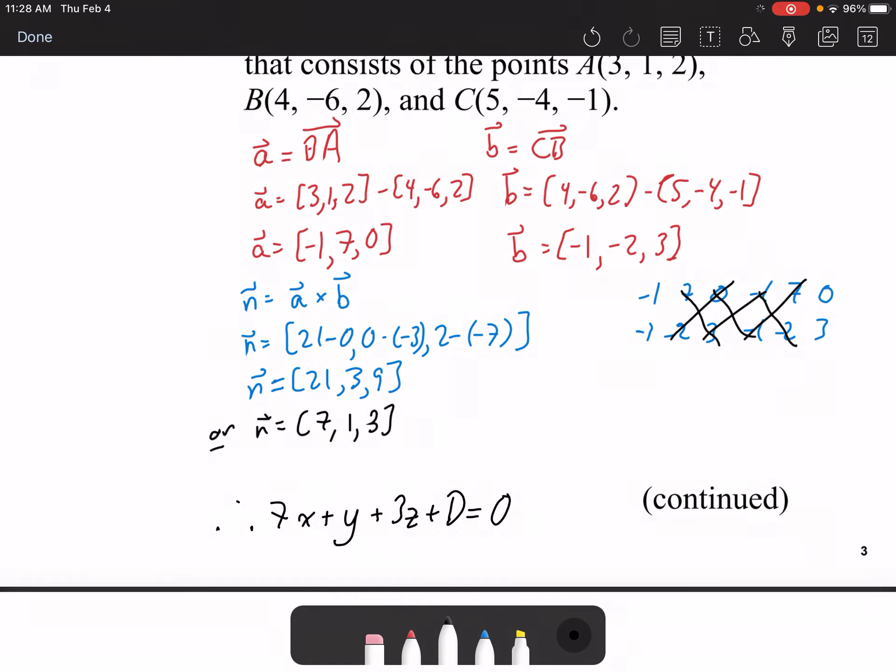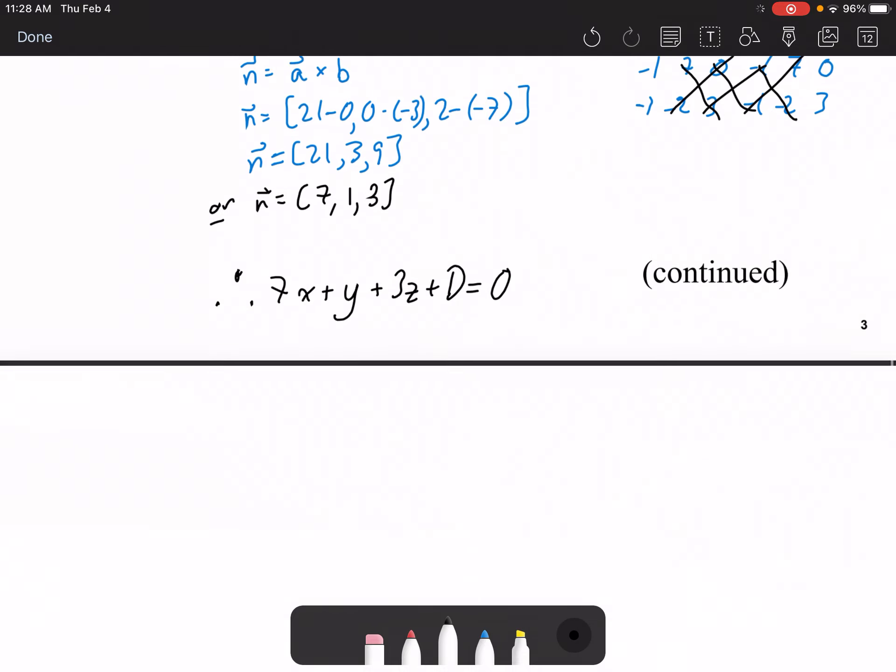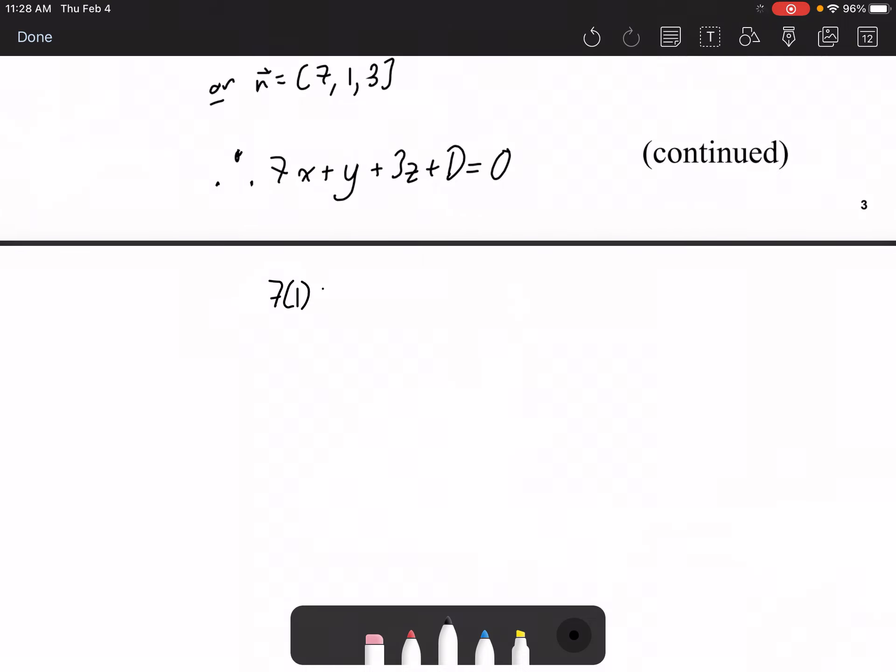To figure the rest of this out, all you need to do is substitute one of the points, 3, 1, 2, 4, negative 6, 2, or 5, negative 4, negative 1 into the original equation. Or into this scalar form, or into this equation. So, I'm going to substitute 3, 1, and 2 in to work this out. So, my d value turns out to be negative 28. So, there's the scalar form of my plane. 7x plus y plus 3z minus 28 equals 0.